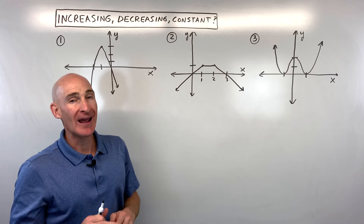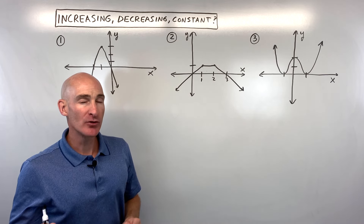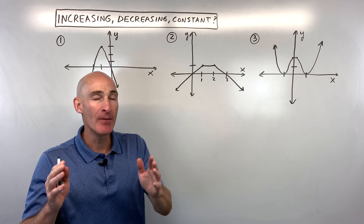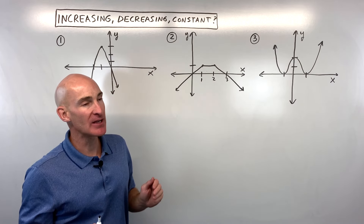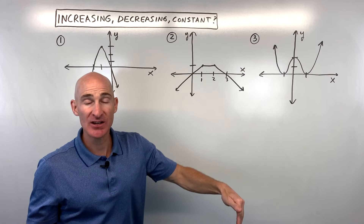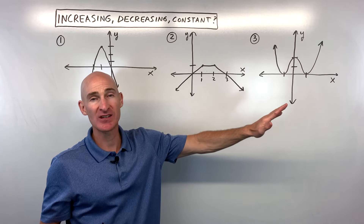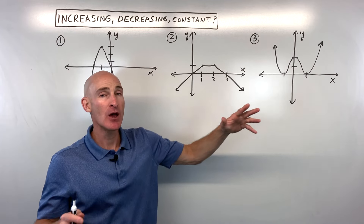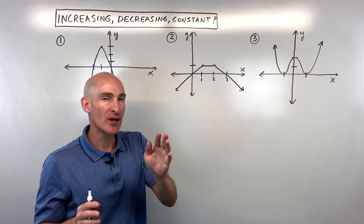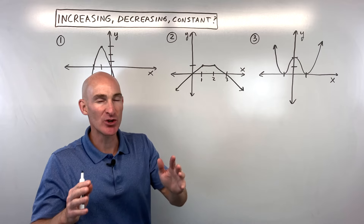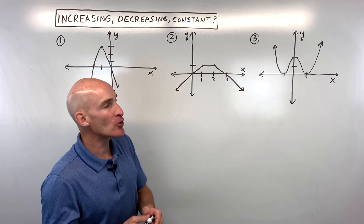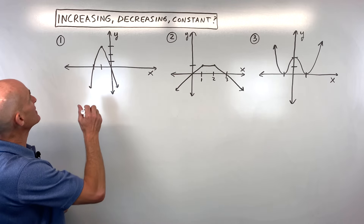Now, if you don't remember anything from this video, the most important thing is you don't want to include the endpoints of the interval. When the graph is changing from increasing to decreasing, or decreasing to increasing, or decreasing to constant — at that particular point where it's changing, you don't want to include it because it's switching from one type to another. Let's go through some examples together.